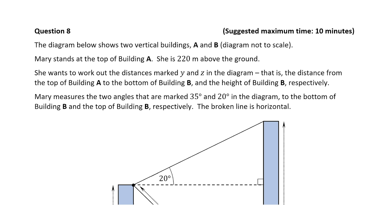We're given a diagram showing two buildings A and B. We're told that Mary stands on the top of building A and that she is 220 meters off the ground. She wants to work out the distances marked Y and Z in the diagram — that is the distance from the top of building A to the top of building B and the height of building B. It also tells us that Mary measures two angles marked 35 degrees and 20 degrees, and that the broken line is horizontal.